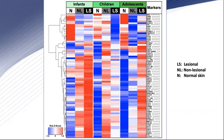The top part of this heat map presents an overall red to blue transition, indicating the down-regulation of barrier-related genes across all AD age groups as compared to normal controls.